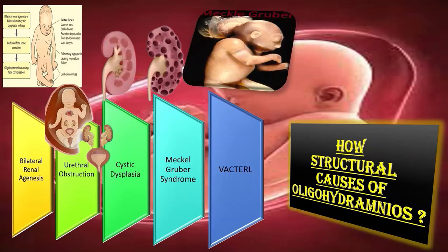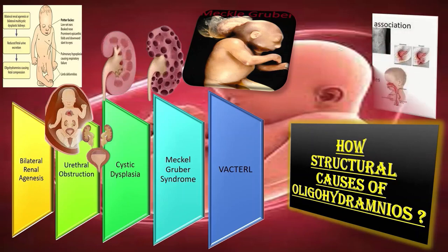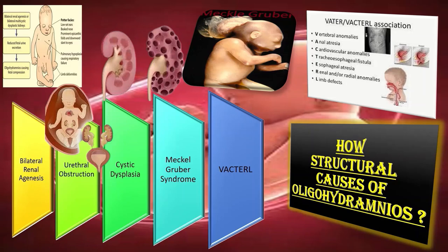In Meckel-Gruber syndrome, the classical triad is occipital encephalopathy, polycystic kidneys, and post-axial polydactyly. Cysts develop first in the glomeruli and cortex, and cystogenesis progresses along the tubules and collecting duct in the medulla. Abnormal fetal renal function is the frequent cause of oligohydramnios or anhydramnios in Meckel-Gruber syndrome. In VACTERL syndrome — vertebral defects, anal atresia, cardiac defects, tracheoesophageal fistula, renal anomalies, and limb abnormalities — abnormal renal function is similarly the frequent cause of oligohydramnios.